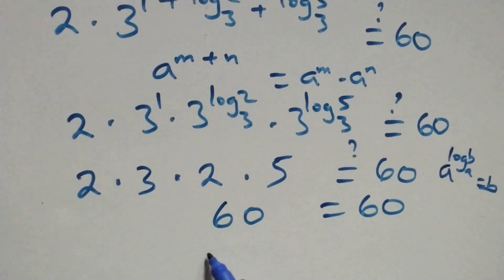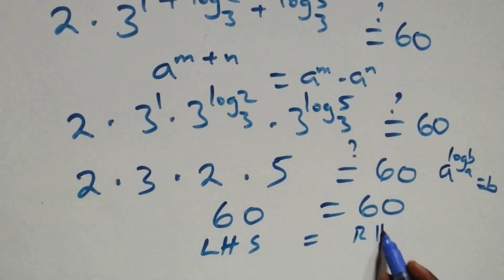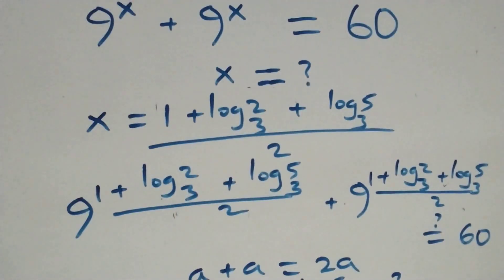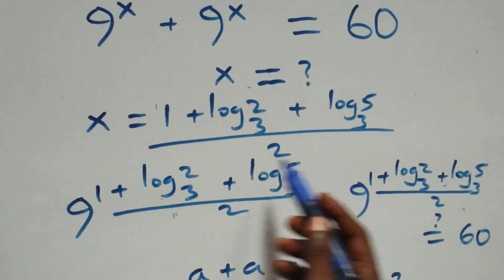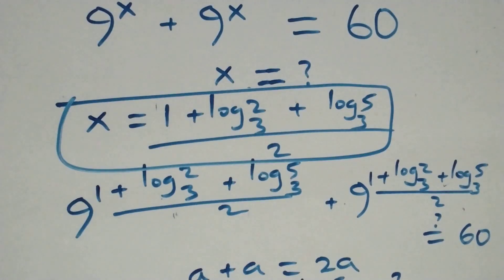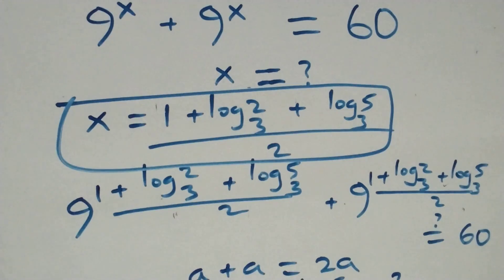The left-hand side equals the right-hand side, and therefore we conclude that x equals (1 plus log₃2 plus log₃5) over 2 satisfies the given problem. Thank you for watching — don't forget to subscribe for more videos, turn on the notification bell, share this video, give a thumbs up, and put your comments. See you next class, bye for now.